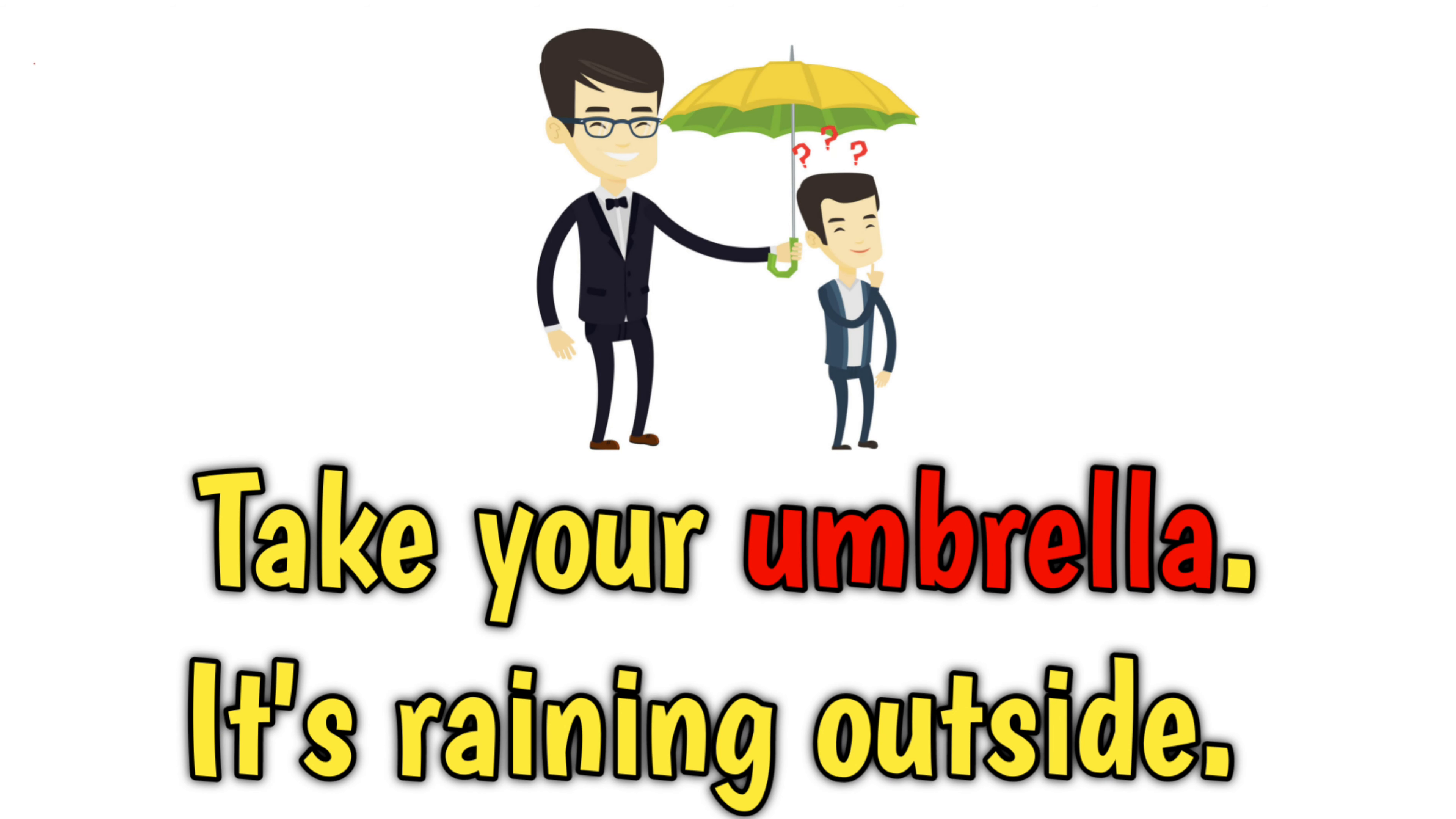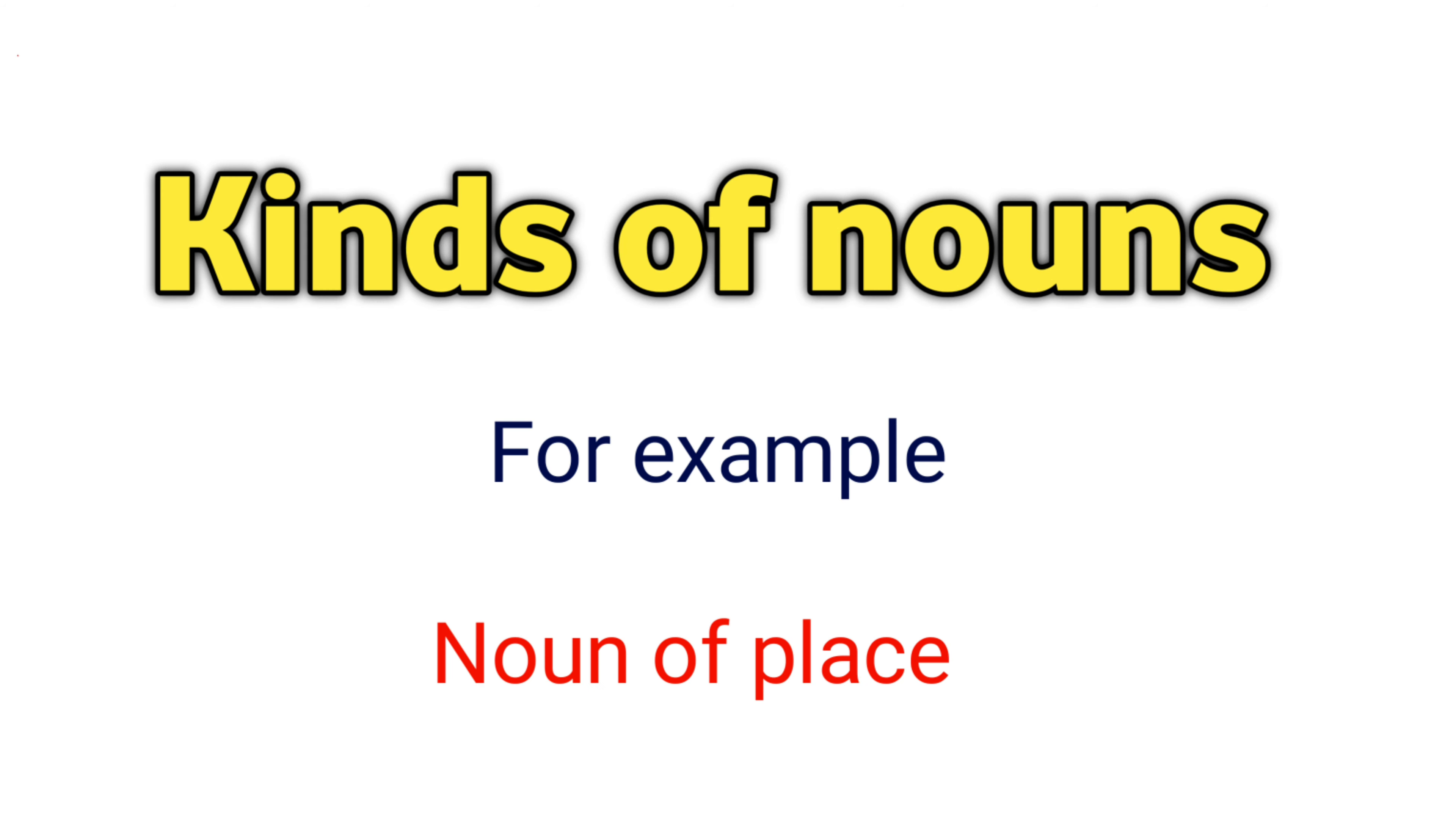Another example: Take your umbrella, it's raining outside. Umbrella is also a noun of thing.